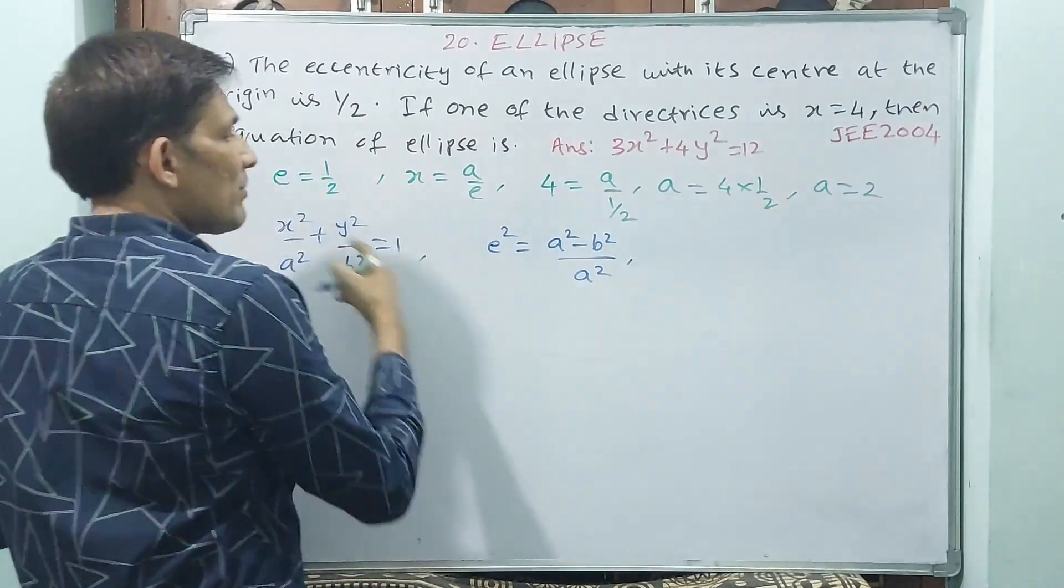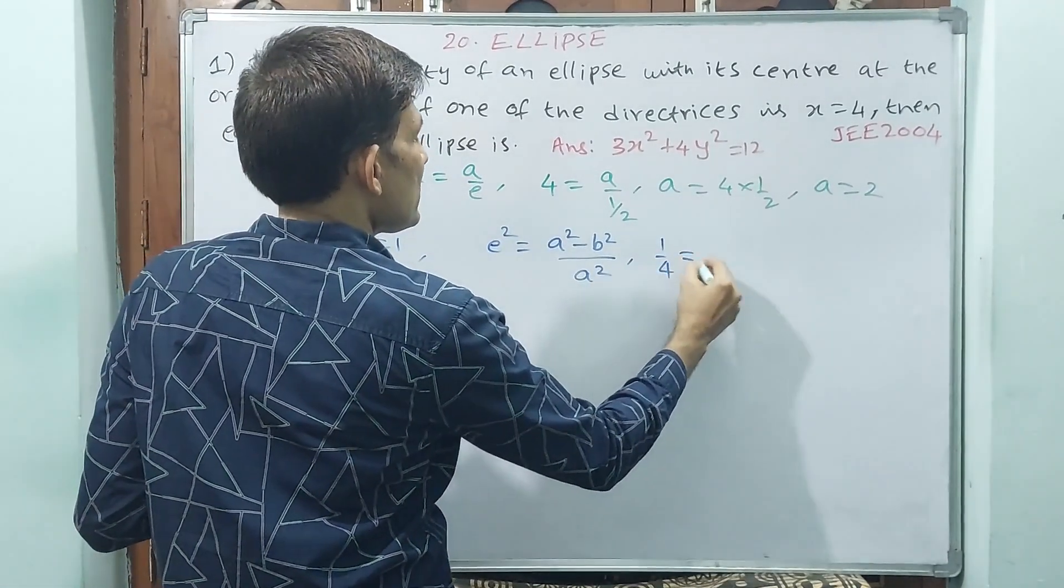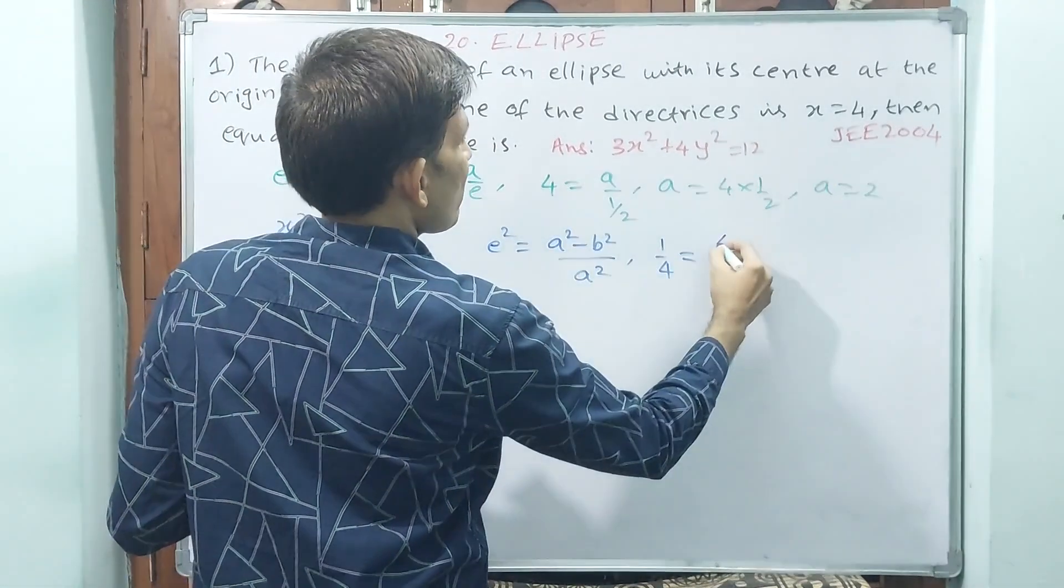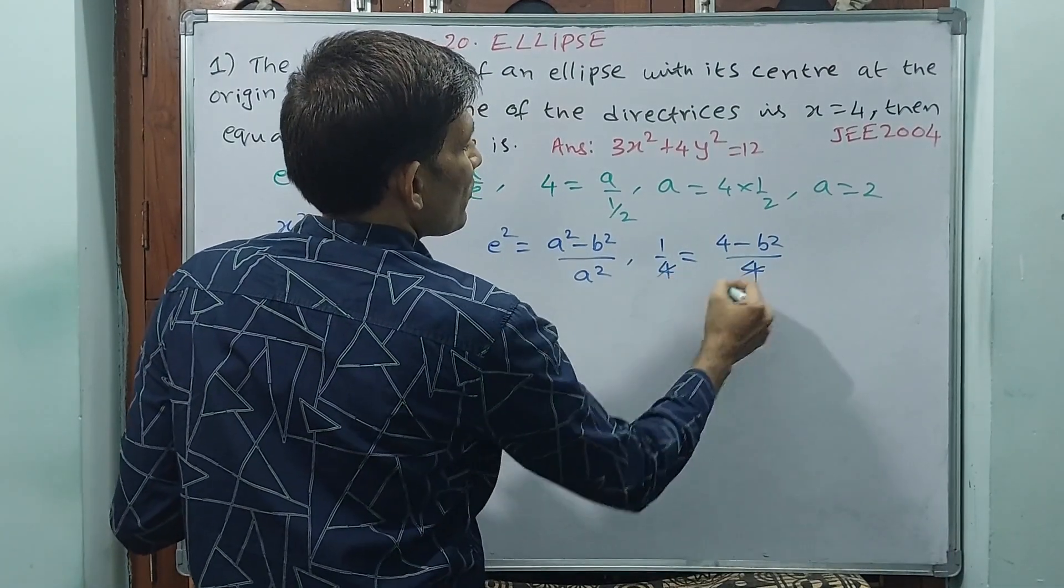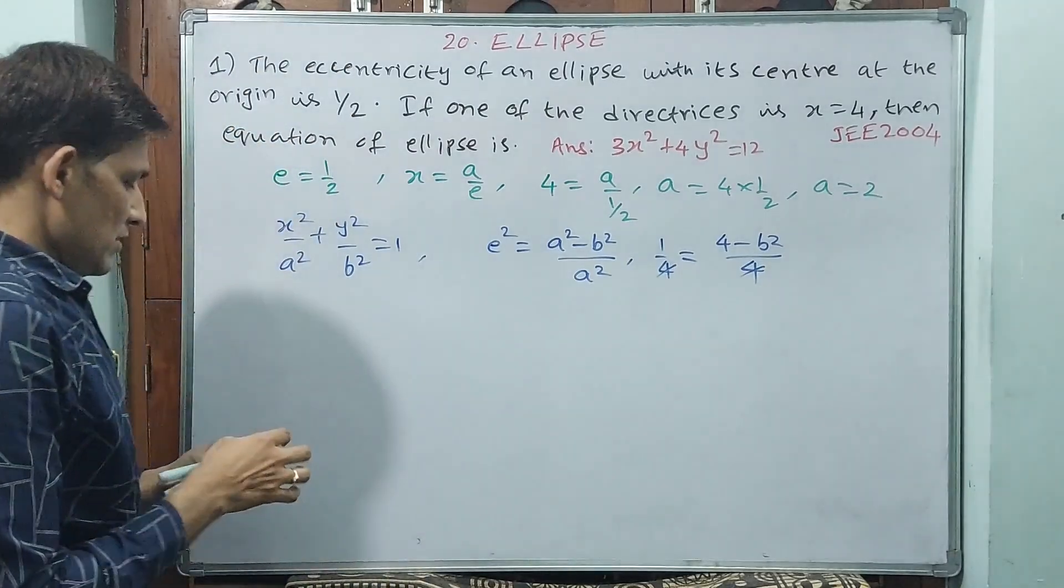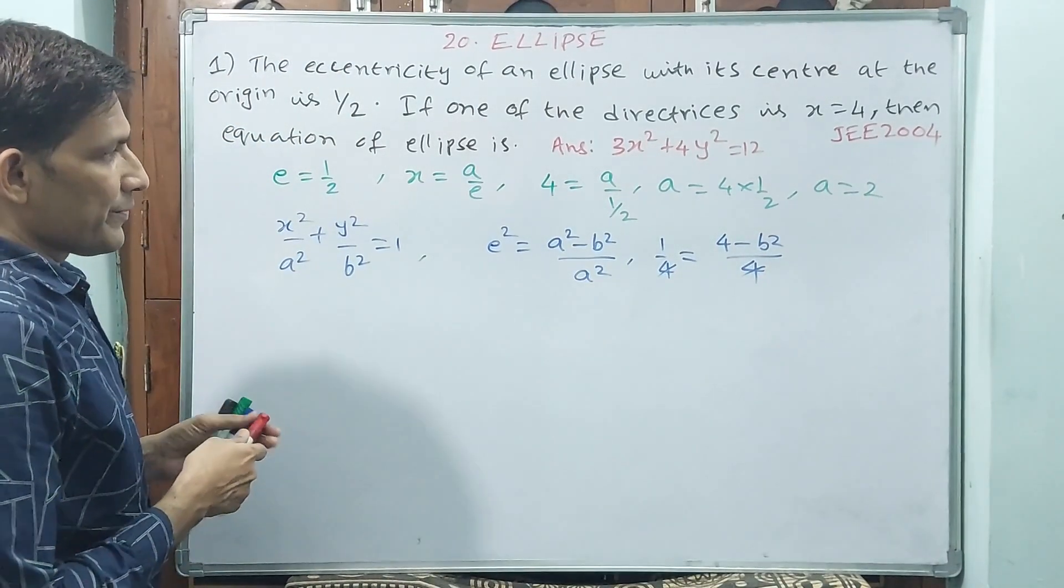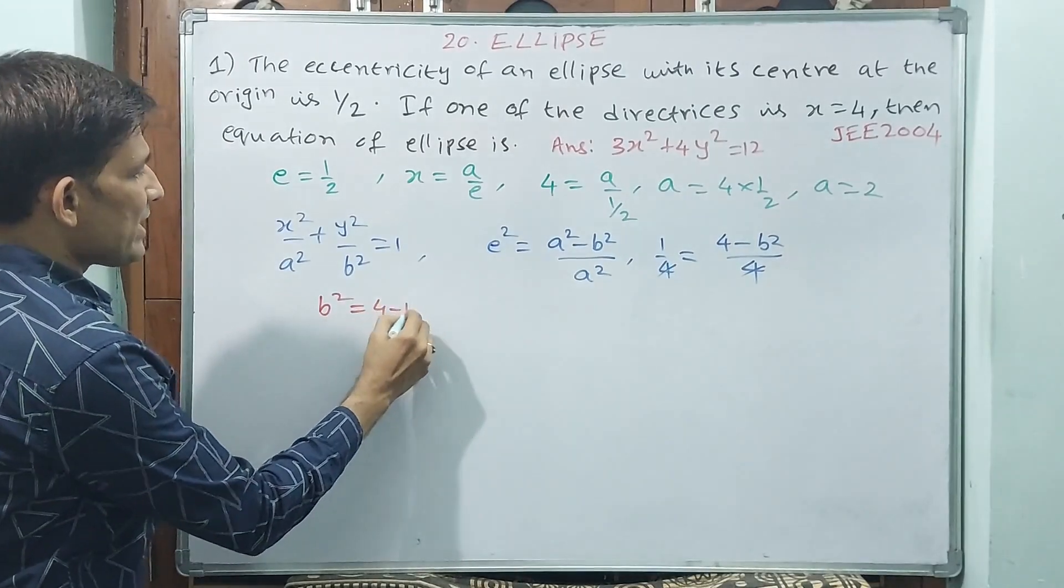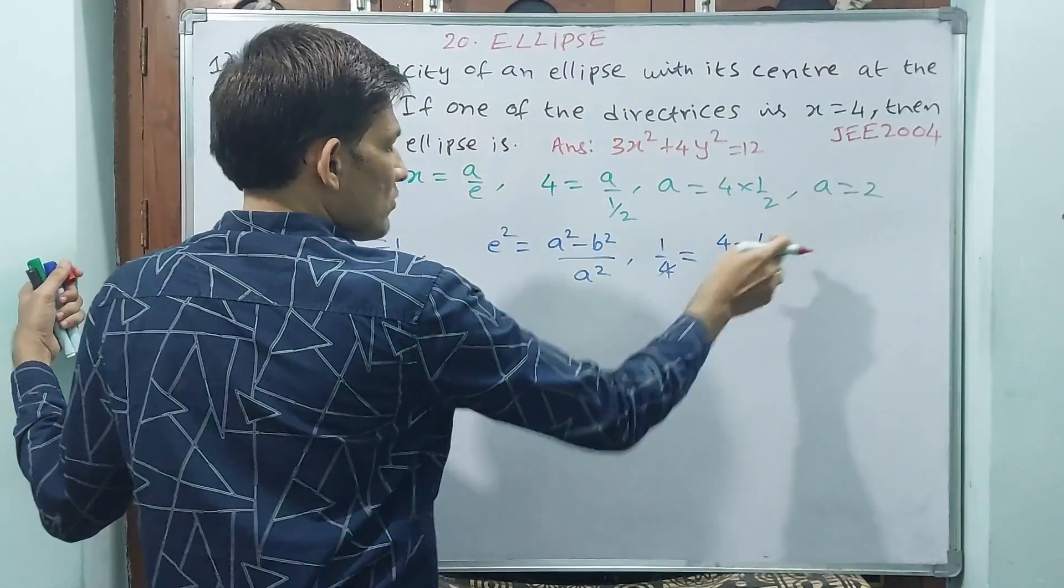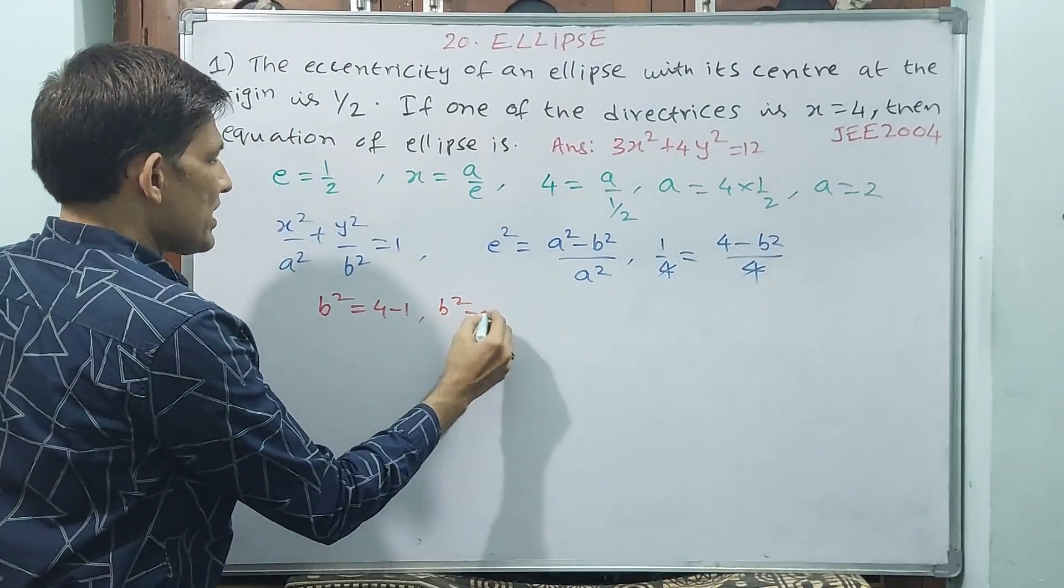e² equals (a² minus b²) by a². Again, 4, see 4, 4 you cancel out. If we cancel out 4, if we cancel out 4, then we see b² equals 4 minus 1. b² equals 4 minus 1, that means b² equals 3.